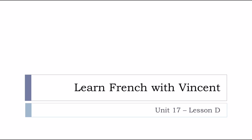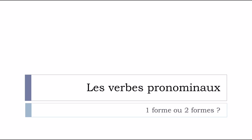Bonjour à tous and welcome to Learn French with Vincent. This is Unité 17, Leçon D. In this lesson we'll see together les verbes pronominaux, and we'll actually try to see whether it's possible to see one form or two forms - une forme ou deux formes.